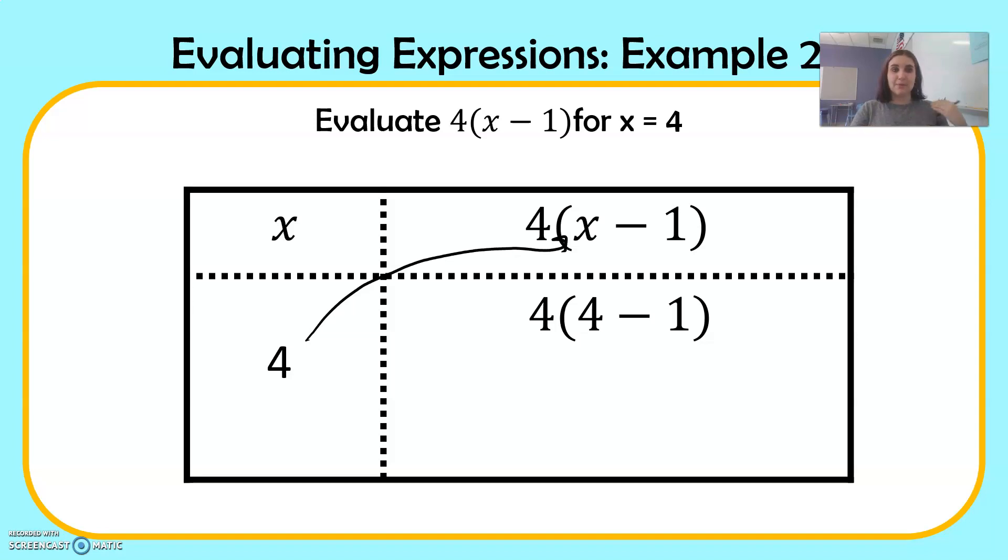And we're going to do what's in the parentheses first. So 4 minus 1 is in the parentheses. 4 minus 1 is 3. And I'm still left with 4. And 4 times 3 is 12.